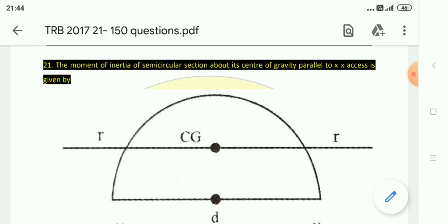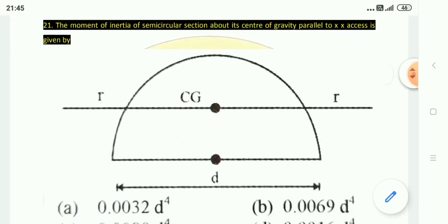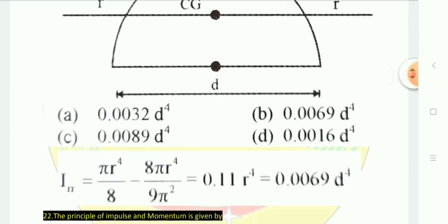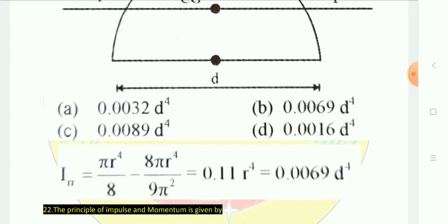Question 21: The moment of inertia of a semicircular section about its center of gravity parallel to the xx axis. I of xx is equal to 0.11r to the power 4. In terms of diameter, r = d/2, so 0.11 × (d/2)^4, giving an answer of 0.0069d to the power 4. This option is correct.